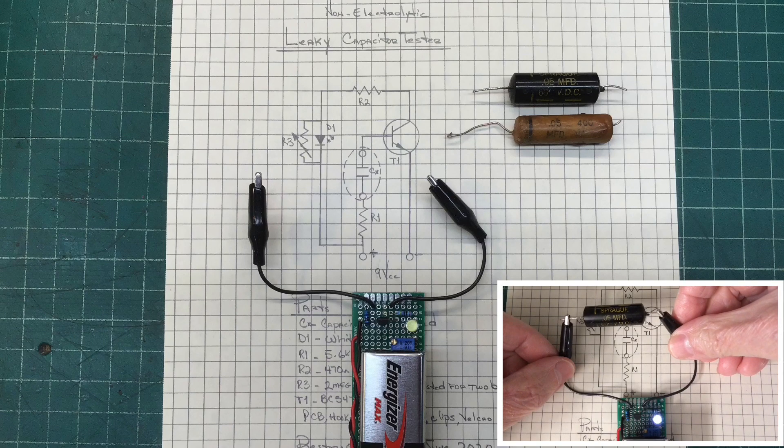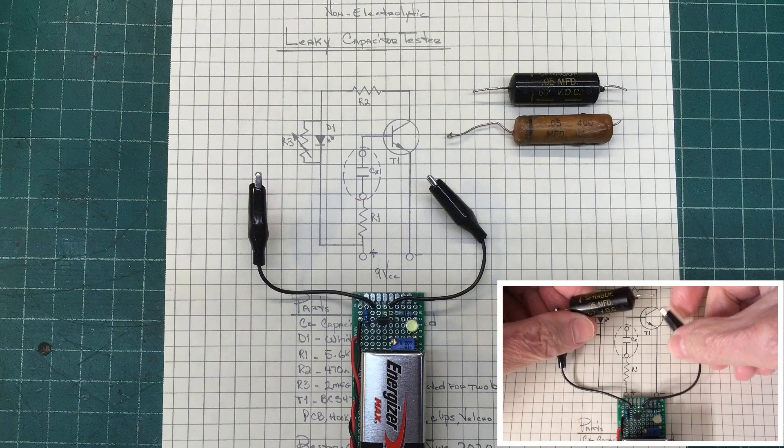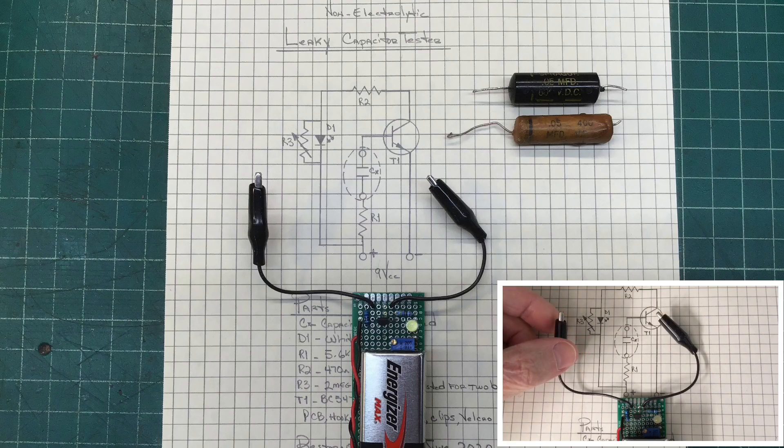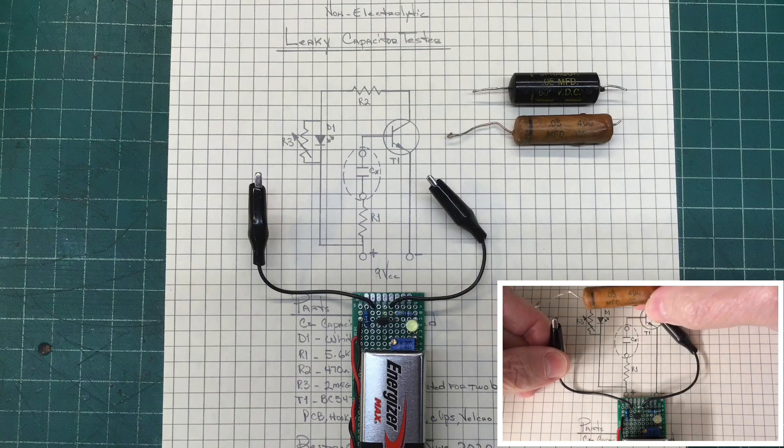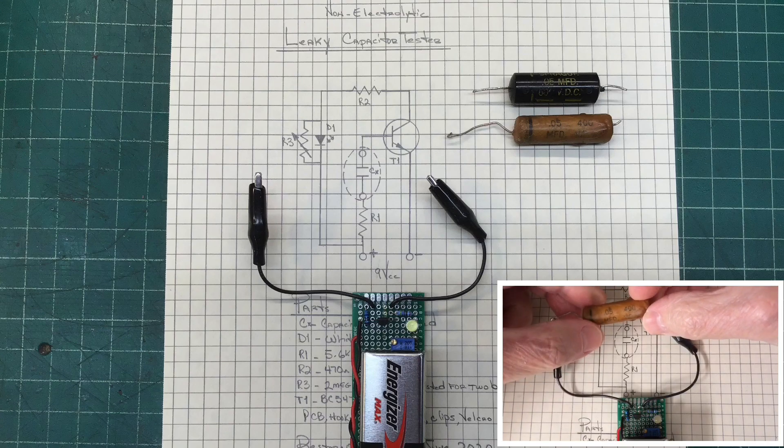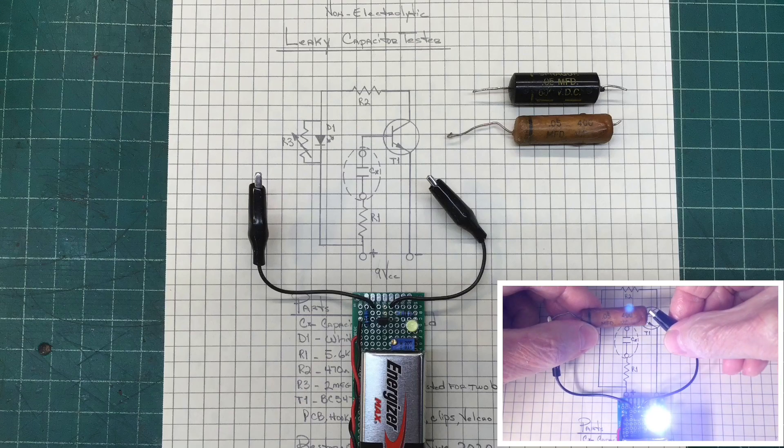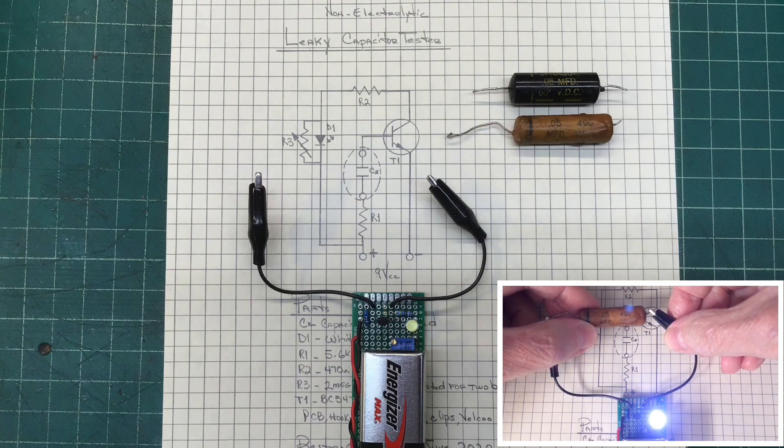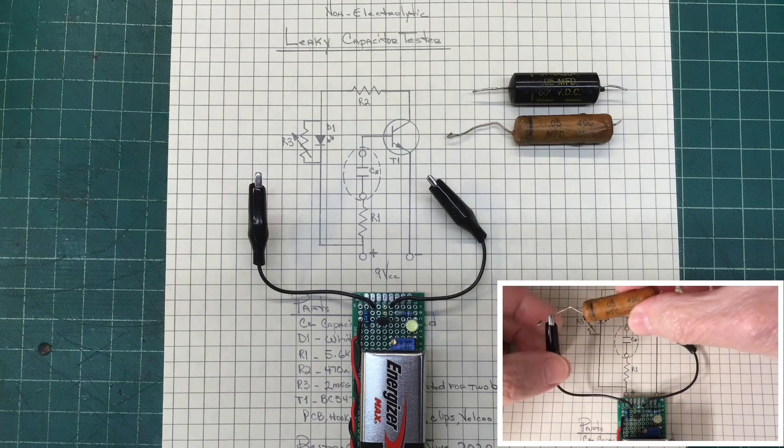When we were walking through the repairs I had mentioned most of those capacitors, probably 100 percent of those caps, were leaky. The ones I've tested 100 percent are definitely leaky. All that means is the dielectric is breaking down and the capacitor plates completely short out or have resistance between those plates.